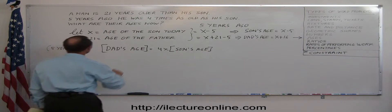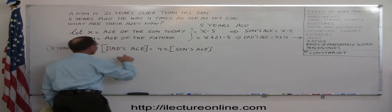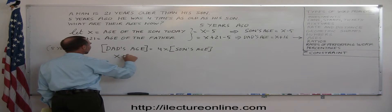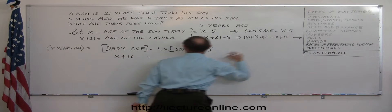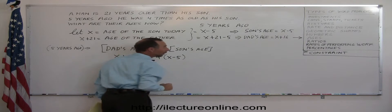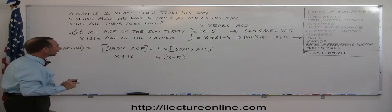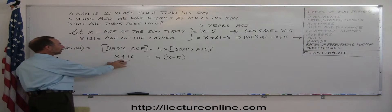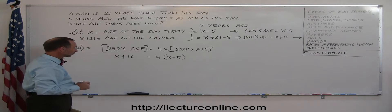So what was the dad's age five years ago? We come over here. Dad's age was x plus 16. So we replace dad's age by x plus 16. And the son's age five years ago was x minus five. So that would be four times x minus five. Now we have replaced the English sentence into an equation, into a linear equation with the variable x. And now we can go ahead and solve that equation like we normally do.